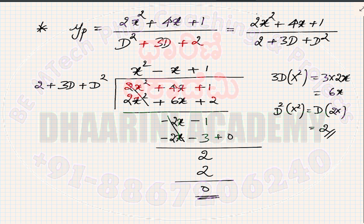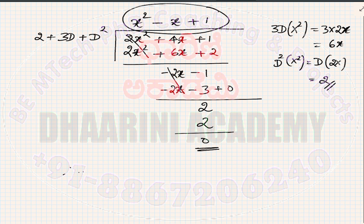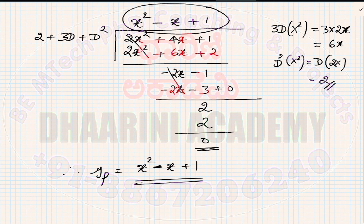Therefore, the yp of this particular problem is x² − x + 1. We got an equation in terms of x itself, which can be considered as the standard yp of the given problem. In this case, we did not solve the whole problem — we just took the yp part only.